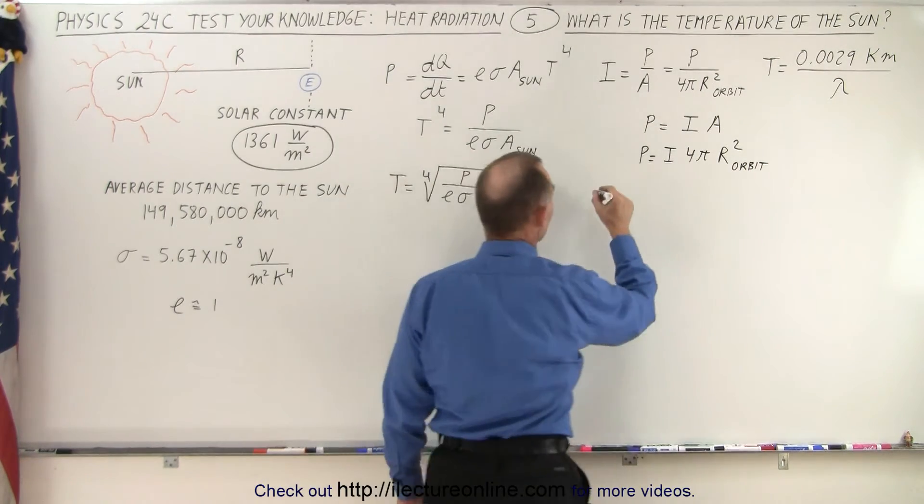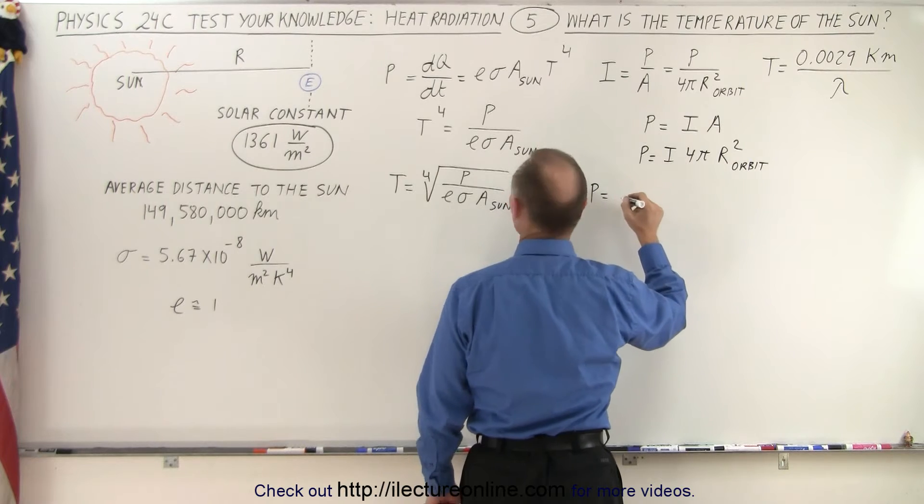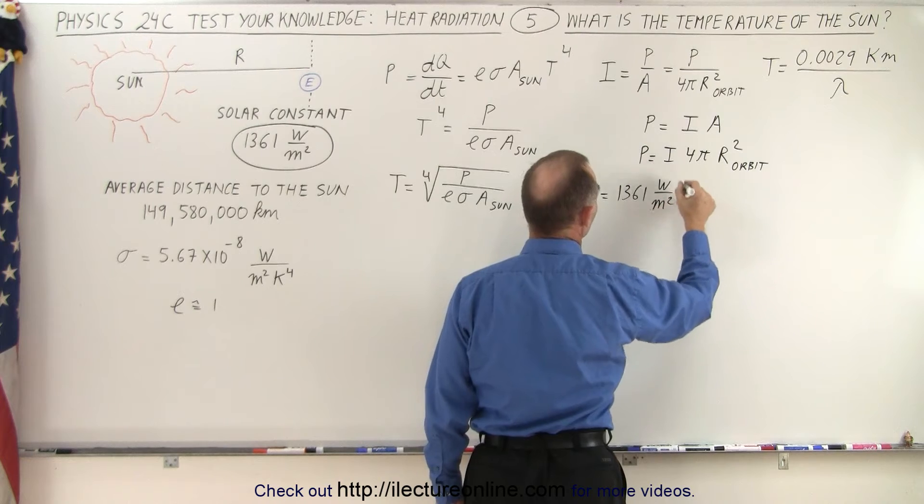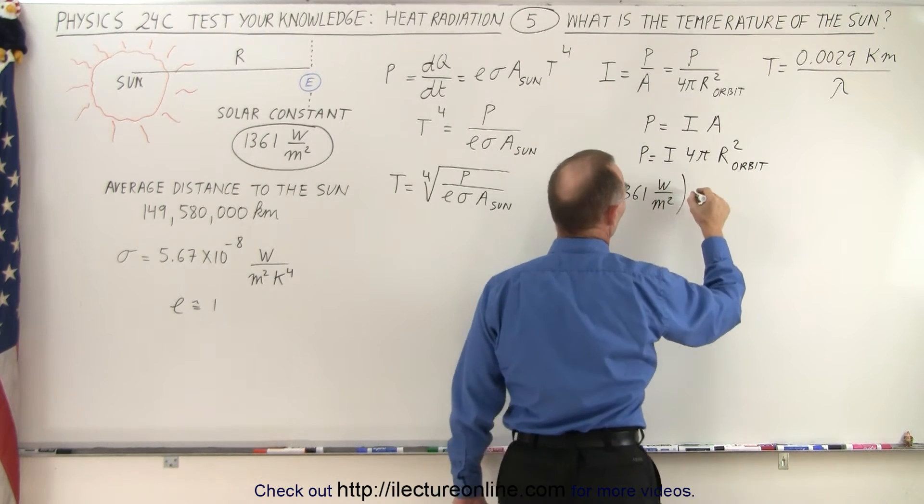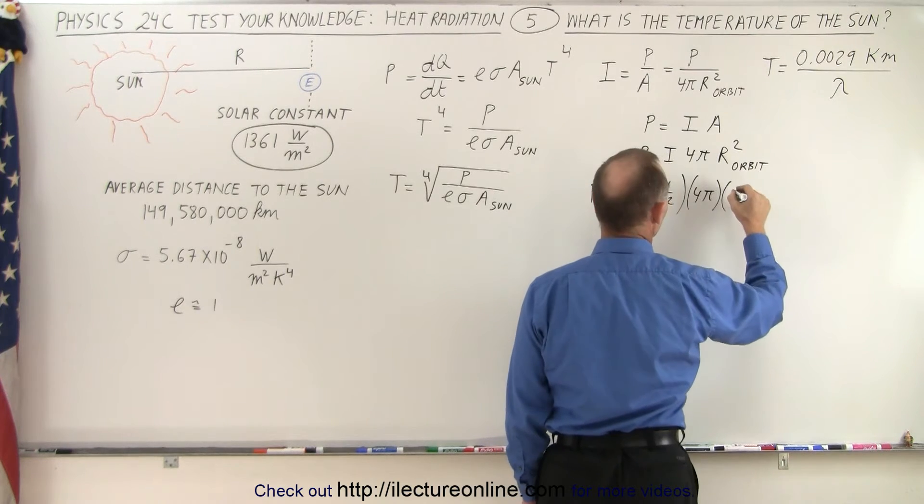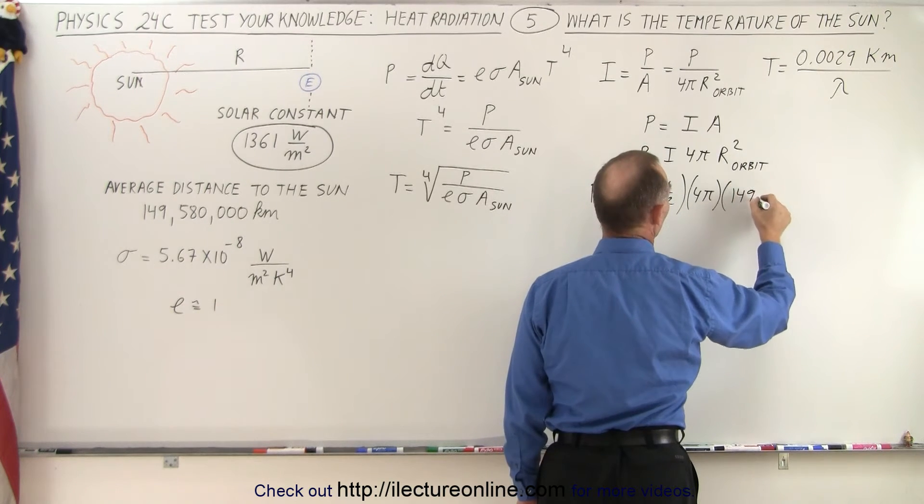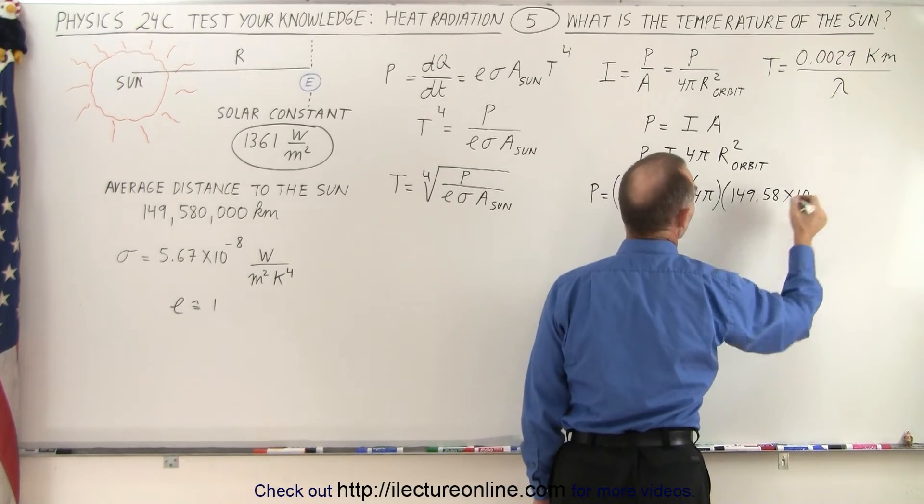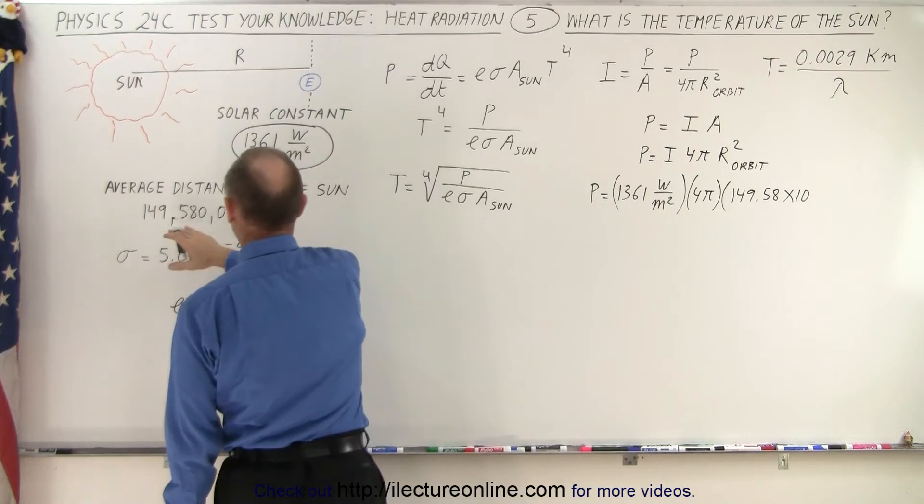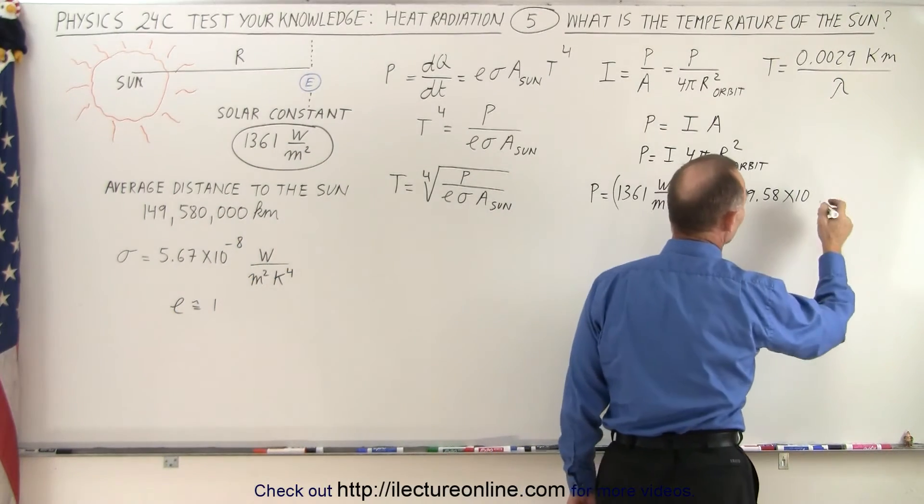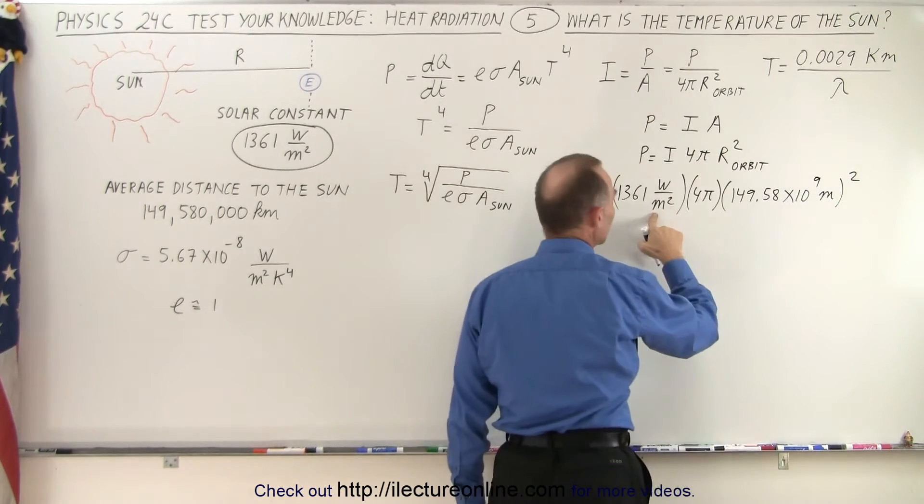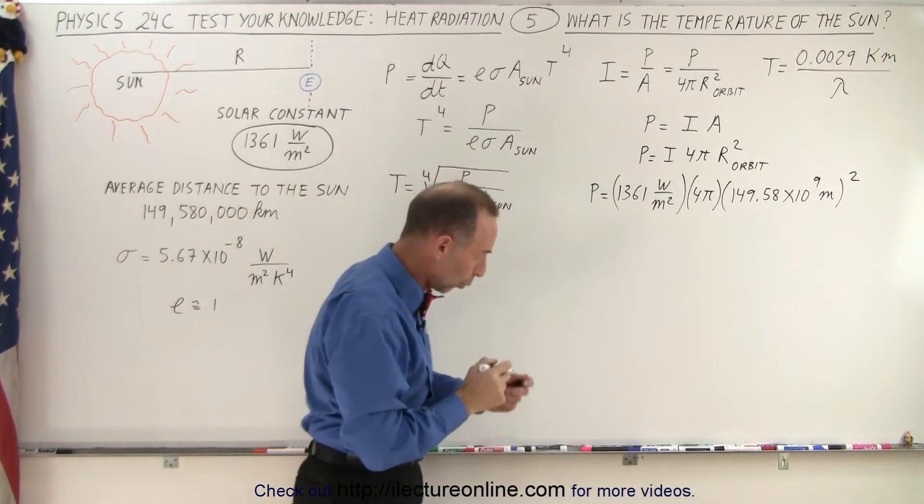Okay, let's bring in some numbers and see what we get. So the power is equal to 1361 watts per square meter times 4π times the radius of the orbit of the earth, that would be 149.58 times 10 to the—this would be in terms of meters, so this is 149 million kilometers, that would be 149 billion meters, so times 10⁹ meters squared.